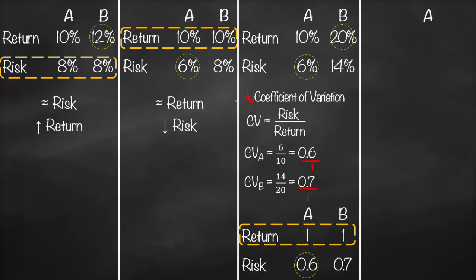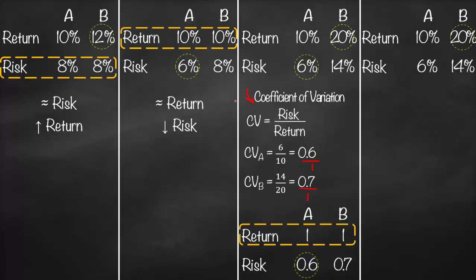Using the same example — investment A with 10% return and 6% risk, investment B with 20% return and 14% risk — we can alternatively unify risk to 1 using the Sharpe Ratio. The Sharpe Ratio equals return minus the risk-free rate, divided by risk. We subtract the risk-free rate because it represents the excess or additional return we earn for taking on risk beyond the risk-free investment.